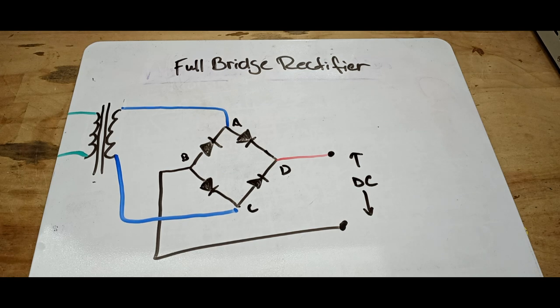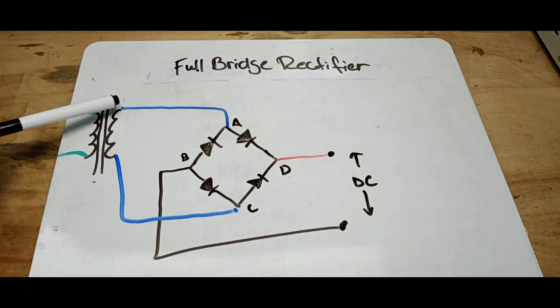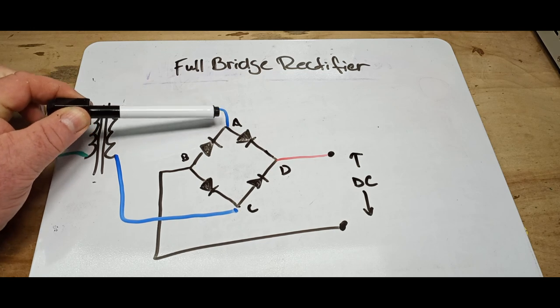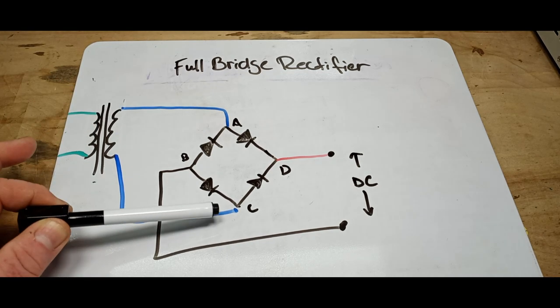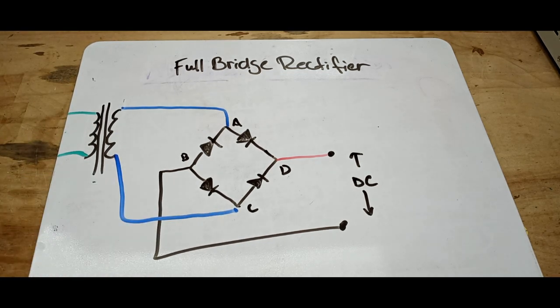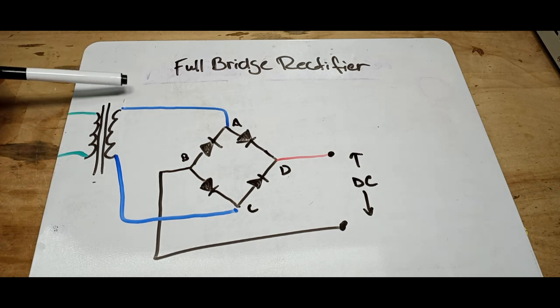So we have our low voltage AC being fed at points A and points C. If this half of the cycle is positive,